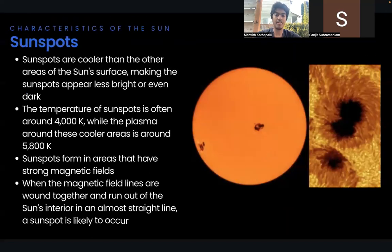Now let's talk about sunspots. Sunspots are cooler than the areas of the sun's surface, making sunspots appear less bright or even dark. The temperature of sunspots is often around 4,000 Kelvin, so they're still pretty hot, but not that hot. While the plasma around these cooler areas is around 5,800 Kelvin.